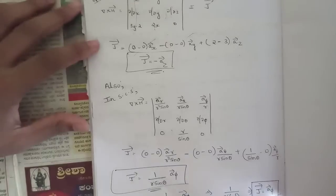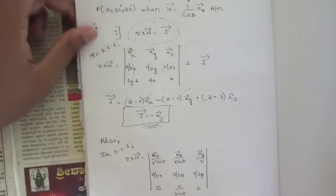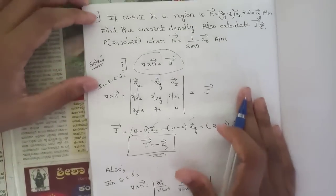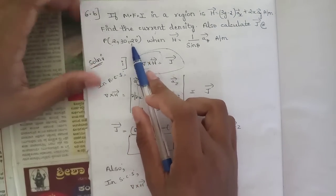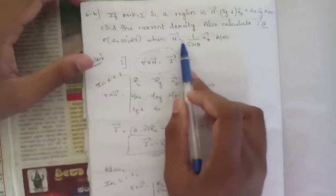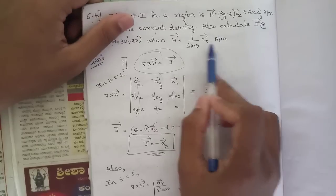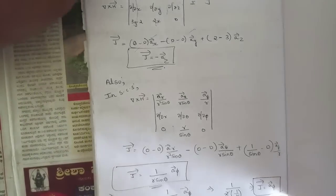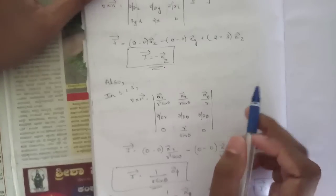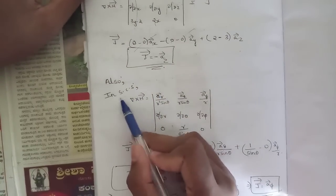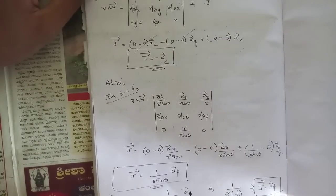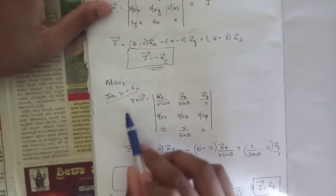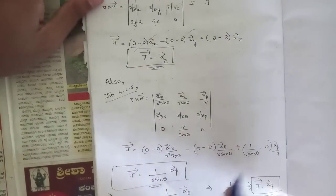For the second case, we find J at point (r=2, θ=30°, φ=20°) with H = (1/sinθ) aθ A/m. Here the values r, θ, φ are given, so we expand ∇×H in the spherical coordinate system.